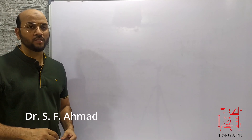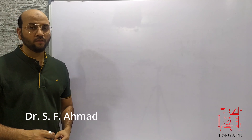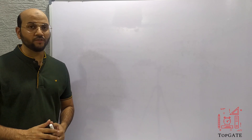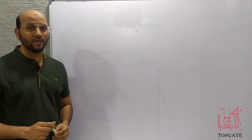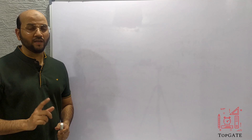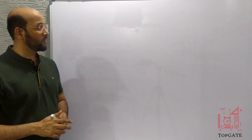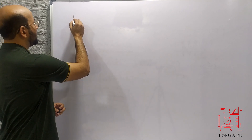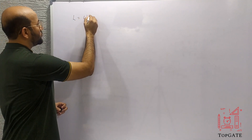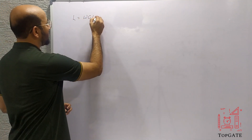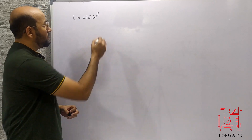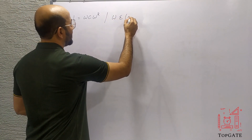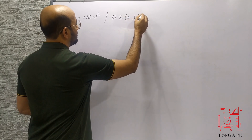Hello students, welcome to the channel Topgate. Today we will be discussing one question: design a PDA for the language L equal to WCW^R, where W belongs to {A, B}+.